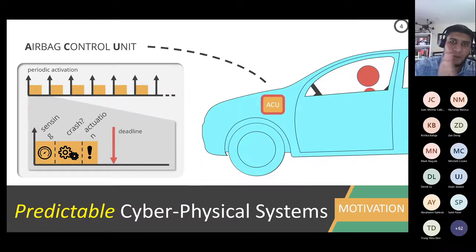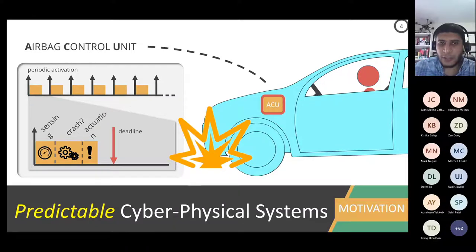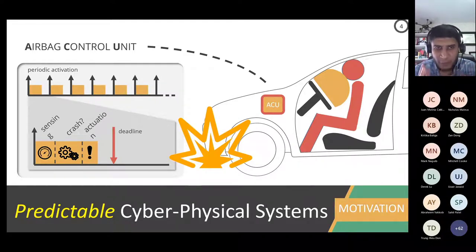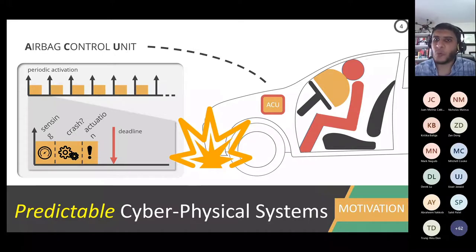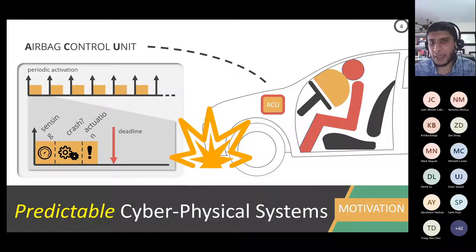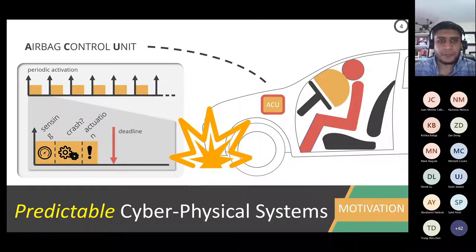If sensing happens fast enough, and computation and opening the airbag after a crash is detected all finish within a certain time window, the airbag will open at the correct timing and save the driver's life. This is functionally correct — we correctly detected a crash and did the correct actuation — but it is also timing correct because everything happened within the time window. The time window is determined by designers and certification authorities: your airbag must be certified for use in actual cars and has to complete within some period, perhaps one millisecond. They do heavy testing to measure it in worst-case scenarios.